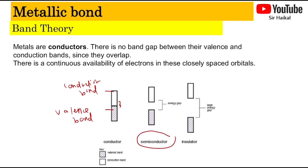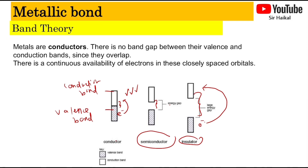For semiconductors, the energy gap is very, very small. For insulators, there is a large energy gap, meaning electrons find it very difficult to jump from the valence band into the conduction band. For conductors, electrons can jump easily from the valence band into the conduction band, which makes electrical conductivity possible.